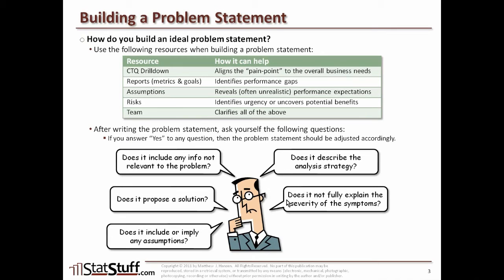Does it not fully explain the severity of the symptoms? If it does not fully explain the severity, then go back and use some other measurements or ways to explain why this is such a severe issue, why it's so important. That really should be included within the problem statement. Finally, you might want to ask yourself: does it presume what the root cause is? If it does, get it out of there. Let the project, as it progresses through the DMAIC methodology, let that root cause naturally be identified using the data — not just some assumptions embedded within the problem statement.